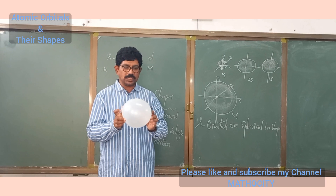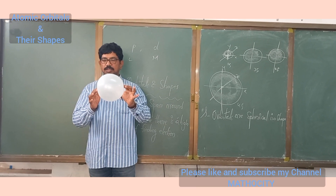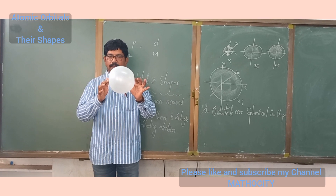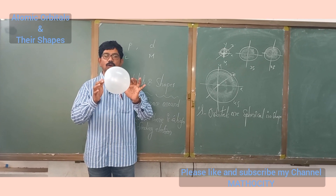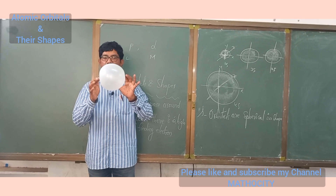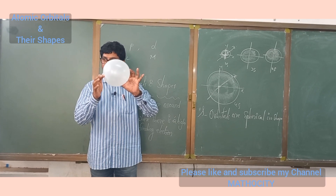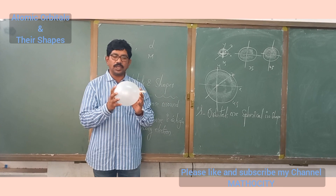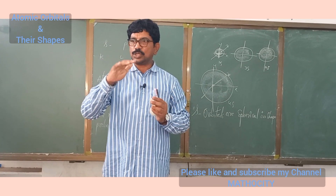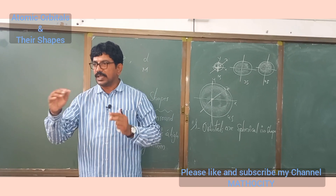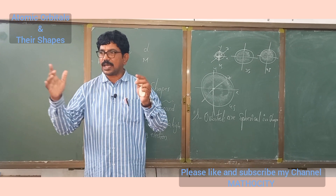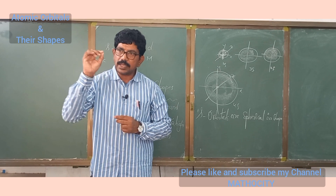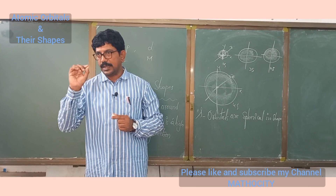This is the shape of the 3S orbital. The electron pair revolves round the region inside the atom. If you move from 1S to 2S, 3S, and 4S, the size of the S orbital goes on increasing, but all S orbitals are spherical in shape.